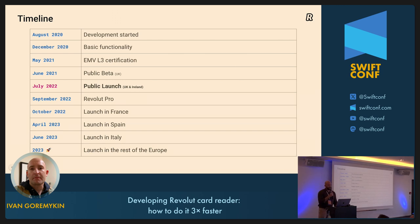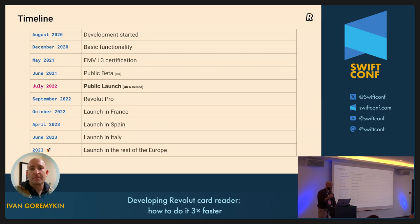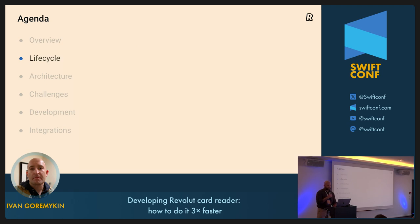Here's the timeline of the project. We started in August 2020 and by December the basic functionality was ready. In May we passed the EMV L3 certification — EMV stands for Europay, Mastercard, and Visa — basically a couple hundred tests requiring you to process different types of cards: Mastercard, Visa, debit, credit, you name it. We went to public beta in June 2021 and did our public launch in the UK and Ireland almost a year later; we needed a lot of time to polish everything. Then we launched the reader for Pro users in the Retail app and launched in France, Spain, and Italy, with more European countries coming later this year.